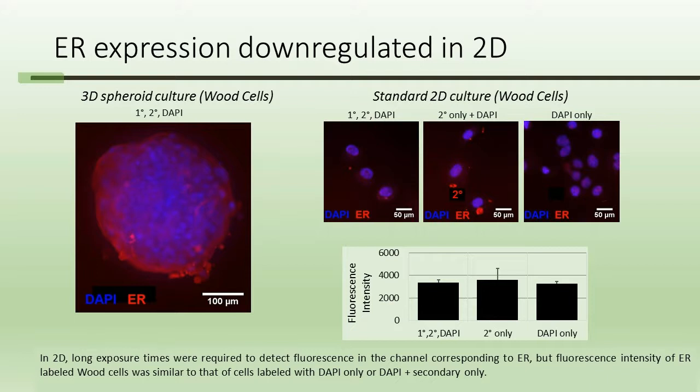So if you had run your assay with a 2D cell culture model using this Wood cell line, the results would be very far off from what you'd predict to see in vivo. When we transfer our assay over to a 3D cell culture model in this context, we get a much better predictive test of what's going to happen in vivo. Switching to a 3D cell culture model, while more expensive, is going to result in better translation between our in vitro and in vivo results and ultimately reduce the cost of our drug discovery program.